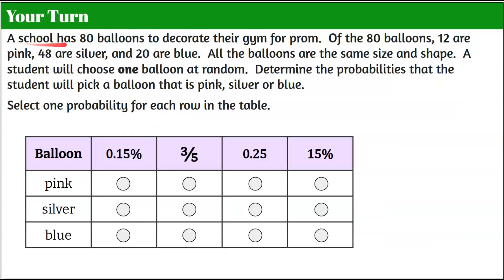Your turn again. A school has 80 balloons to decorate their gym for prom. Of the 80 balloons, 12 are pink, 48 are silver, and 20 are blue. All the balloons are the same size and shape. A student will choose one balloon at random. Determine the probabilities that the student will pick a balloon that is pink, silver, or blue, and select one probability for each row in the table — keeping in mind these are all written different ways. Go ahead, pause the video, do your best work, and then come back to see mine.